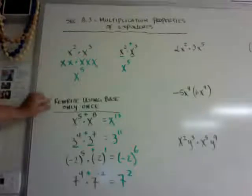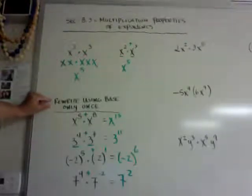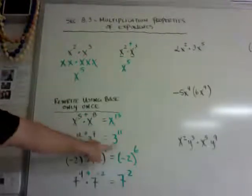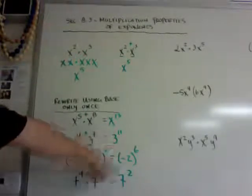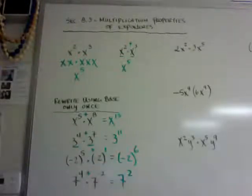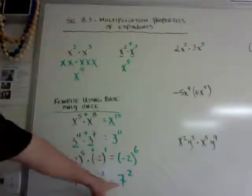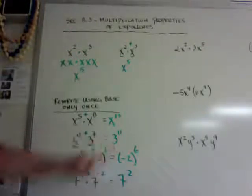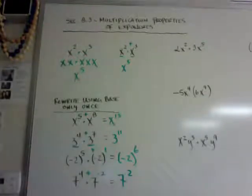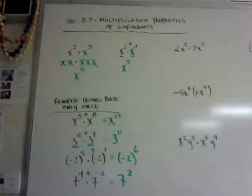If it says rewrite the expression using the base only once, leave it with the base in exponent form. If it says simplify, then you have to actually multiply it out — this would be 49, and 3 to the 11th would stay as 3 to the 11th. Make sure you know the difference between those two instructions.